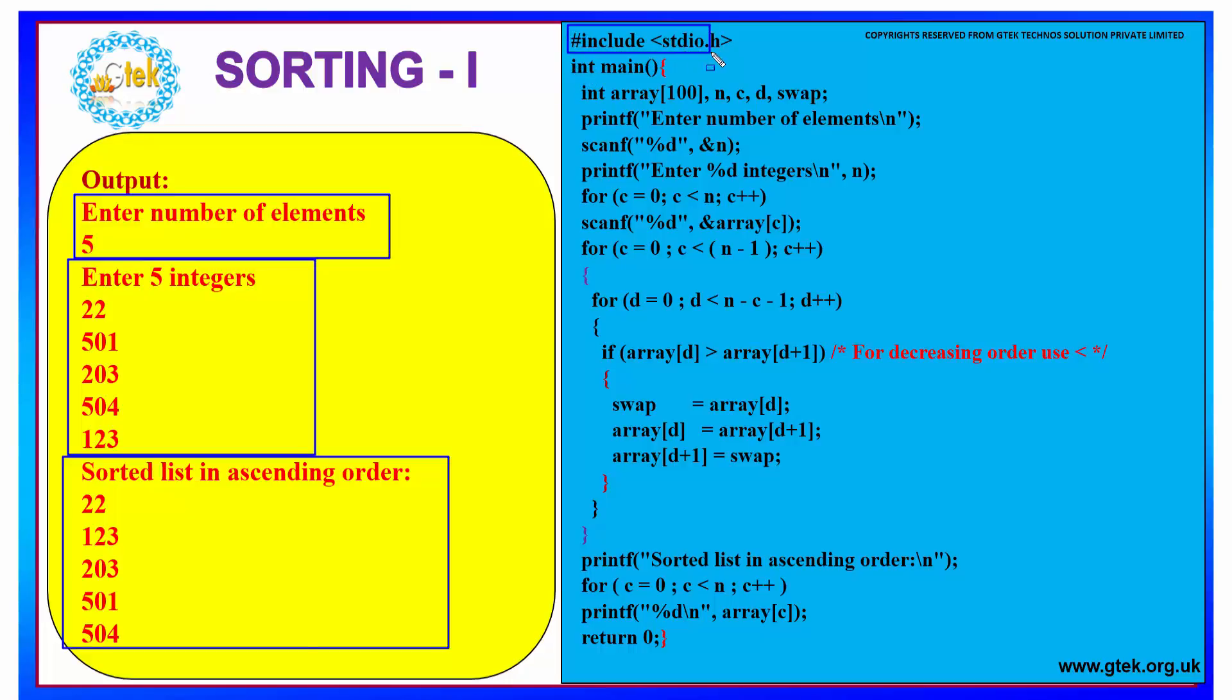You have your standard library function as your first statement followed by your main part. And inside your main portion we have the declaration of an array of type int followed by n, c, d, and swap. We will be seeing the use of n, c, and d and swap as we proceed further. So initially to get the number of elements that we have to do the sort with, we have to give the statement as enter the number of elements. So the user can specify the number of elements he is going to enter for sorting. Say here we have five numbers.